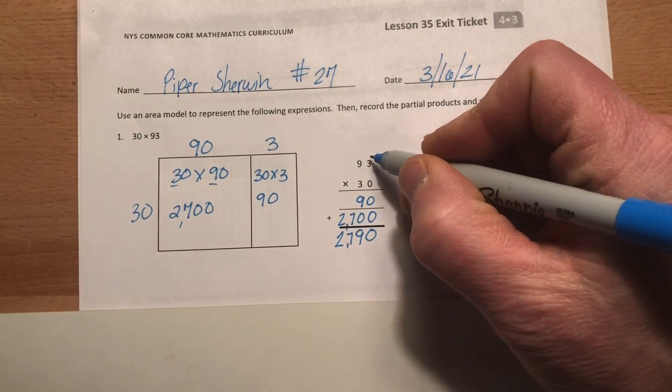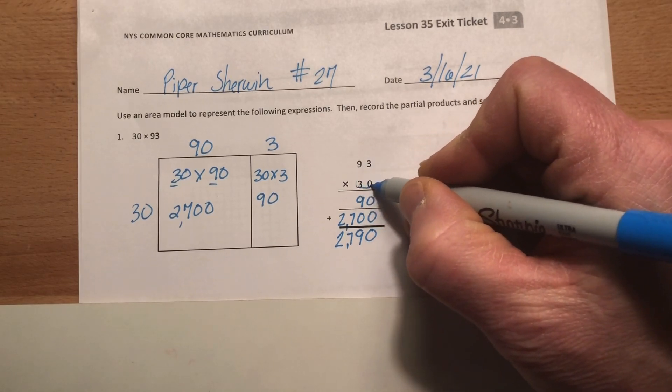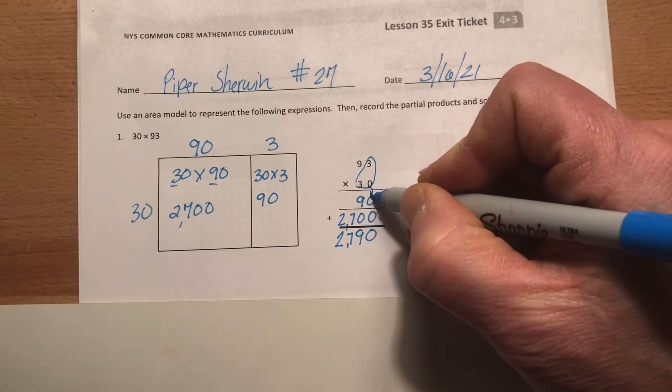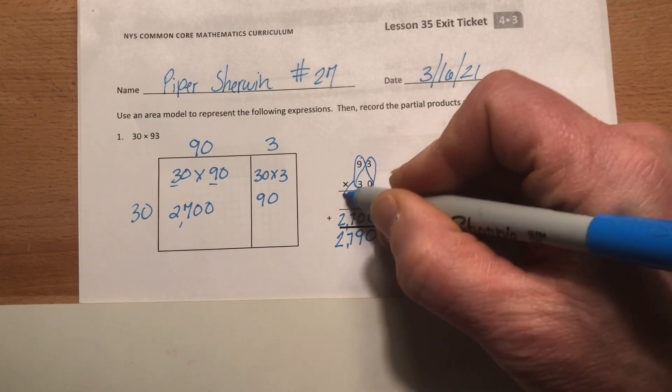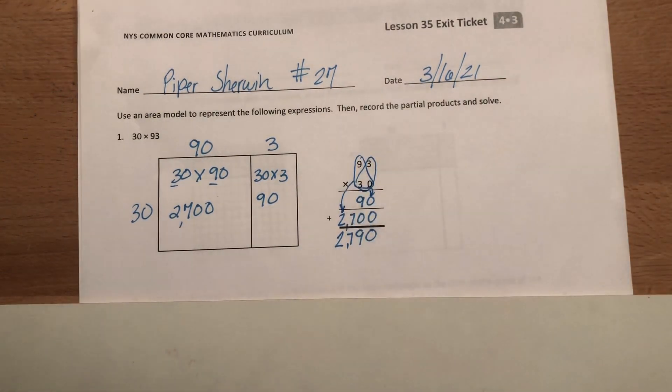Remember, we did this the other day. This 30 times 3 is 90. And this 90 times 30 is 2,700. You add them up, you get 2,790. Okay.